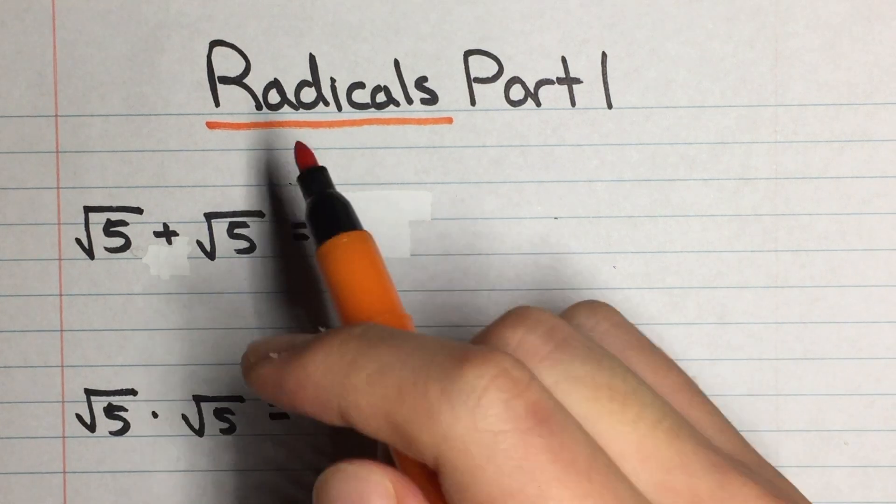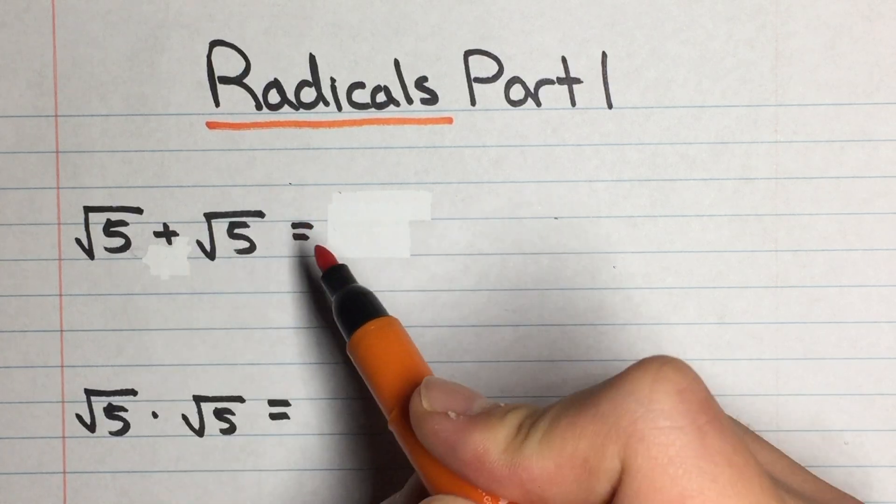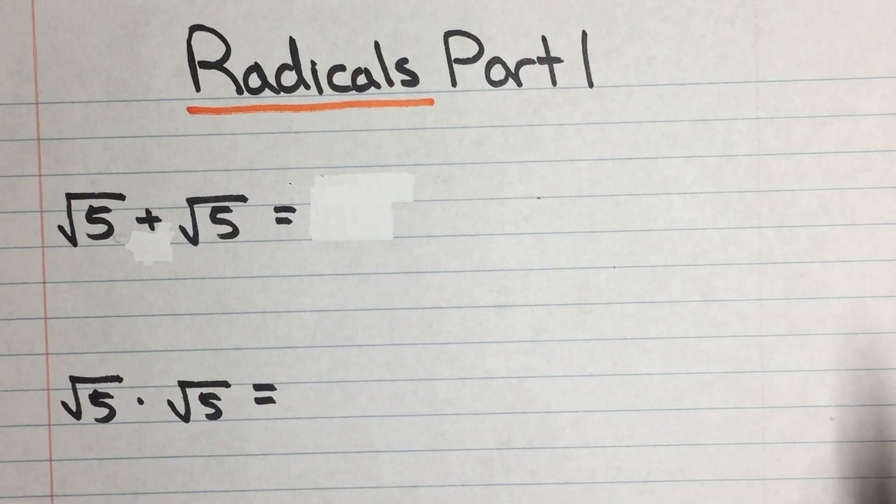So today we'll be covering radicals. They're these square root things that look kind of funny. You don't really see them. You might have seen them, but there's a lot of misconceptions about them. So let's start.